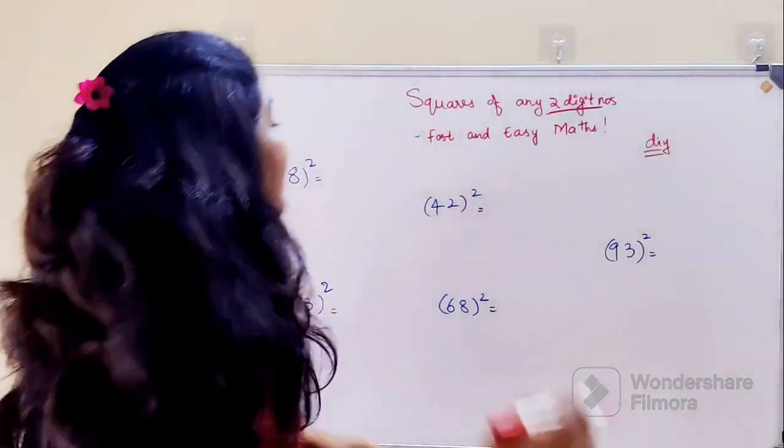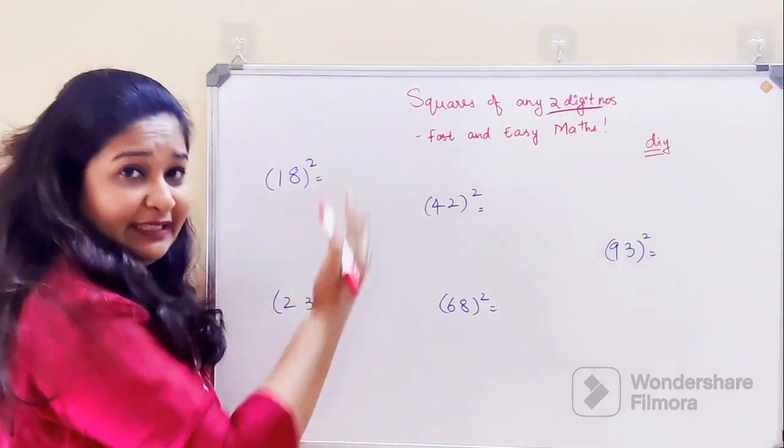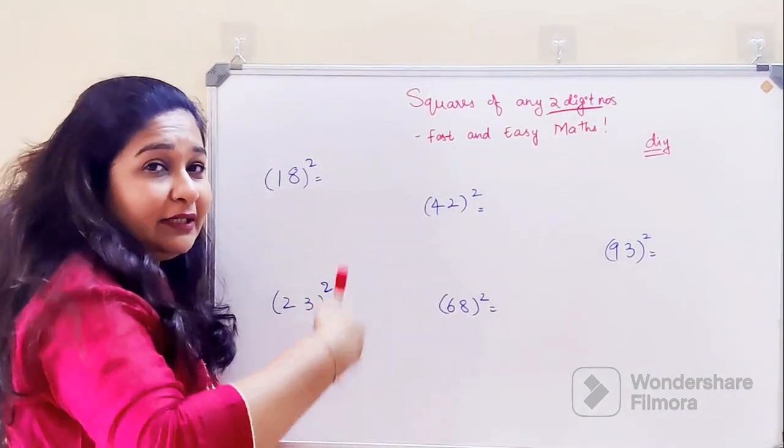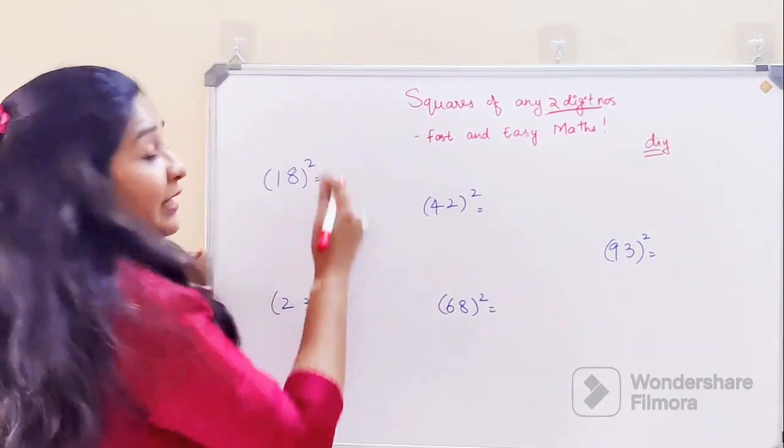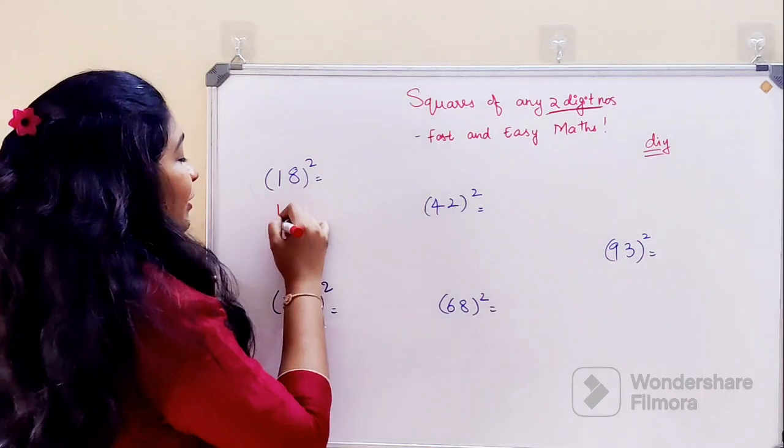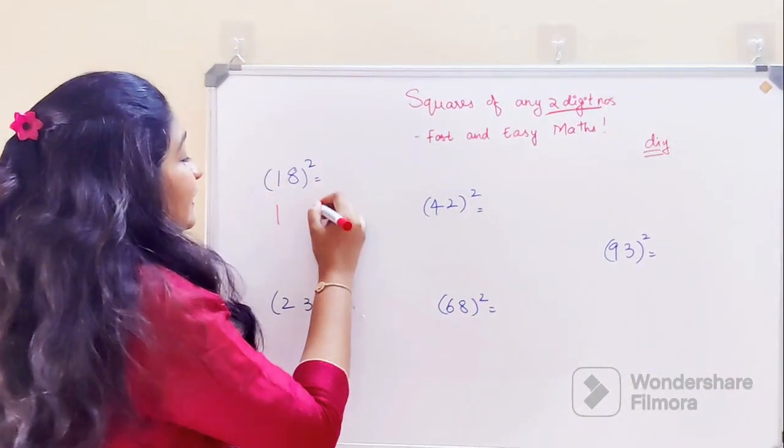Here's what we'll do: we'll try to find the easier ones first. The smaller numbers we'll do first, and then we'll go to the higher ones. So that will be the square of 18. What we'll do is square of 1 is 1, square of 8 is 64.